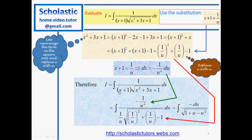Simplifying the whole expression: we multiply top and bottom by u squared. The u squared on top cancels with the 1 over u squared from dx, giving a negative sign out front. Inside the square root, multiplying through by u squared turns 1 over u squared into 1, 1 over u into u, and we get the expression: du over the square root of 1 plus u minus u squared.